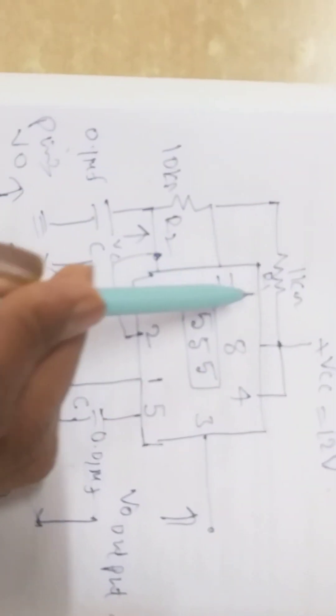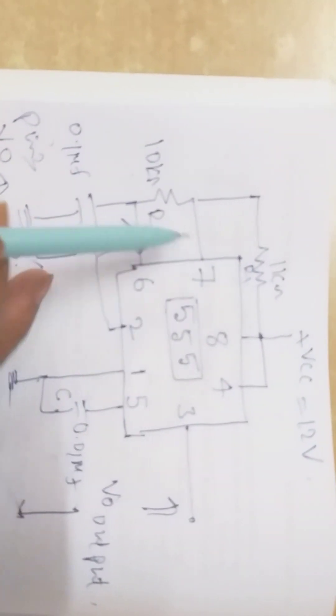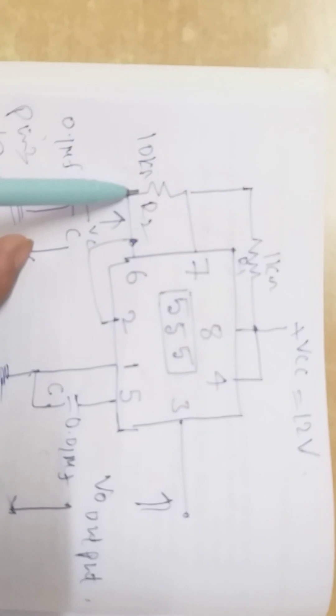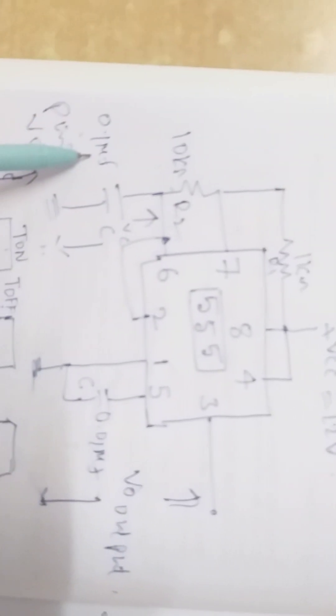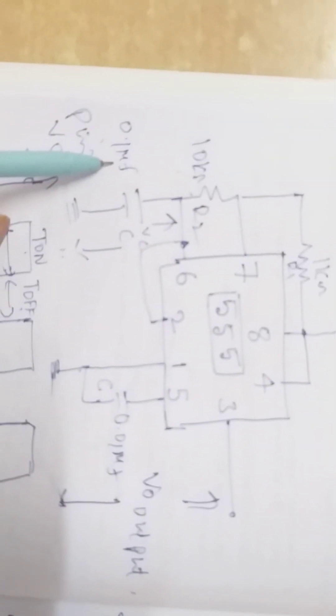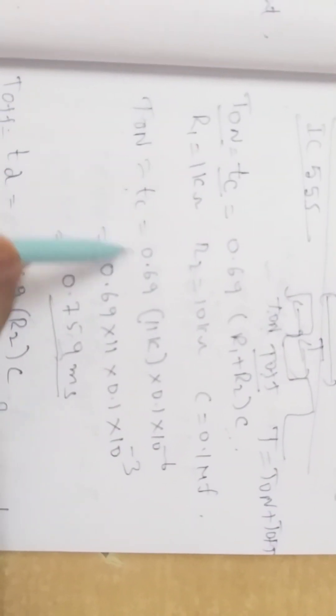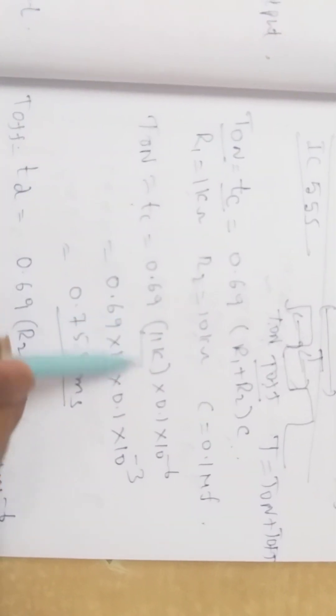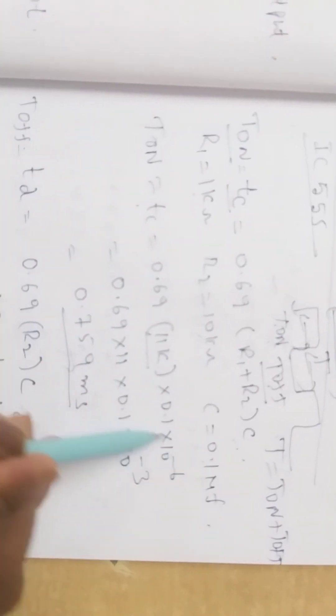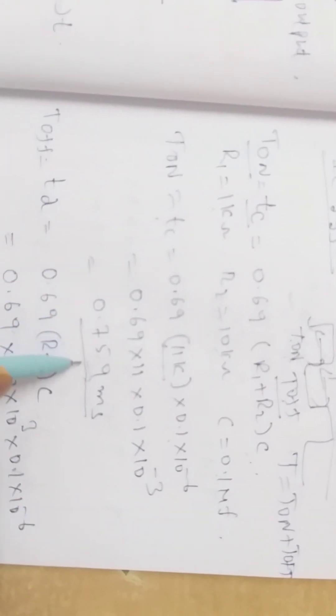Here, R1 is equal to 1 kilo ohm, R2 is equal to 10 kilo ohms, and C is equal to 0.1 microfarad. T_on equals Tc equals 0.69 × (10k + 1k = 11k) × 0.1 × 10⁻⁶. After calculations, we get T_on equal to 0.759 milliseconds.